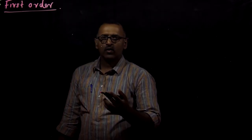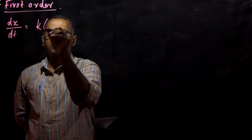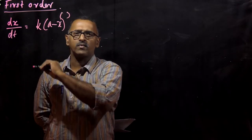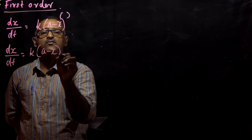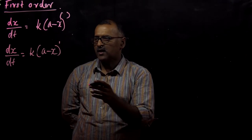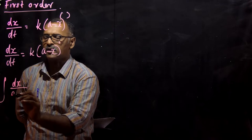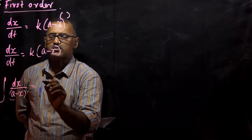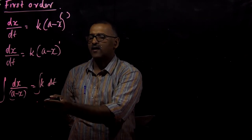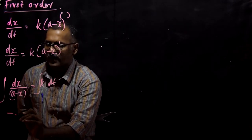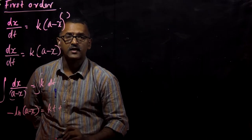Now let us see the first order reactions. Recalling our general rate equation, for a first order reaction we write dx/dt equals K into (A minus X) to the power of 1. Separating variables: integral of dx/(A minus X) equals integral of K dt. The standard integral gives minus log(A minus X) equals Kt plus integration constant C.